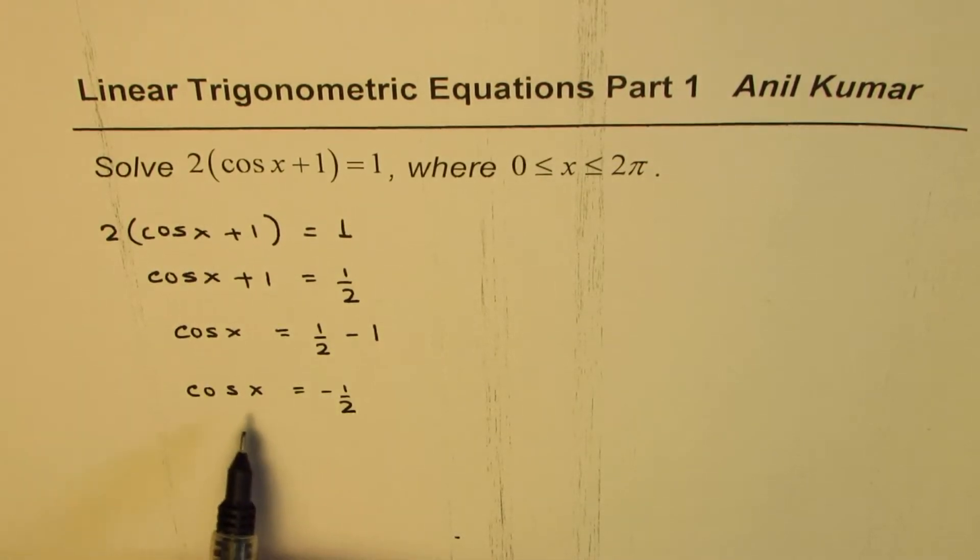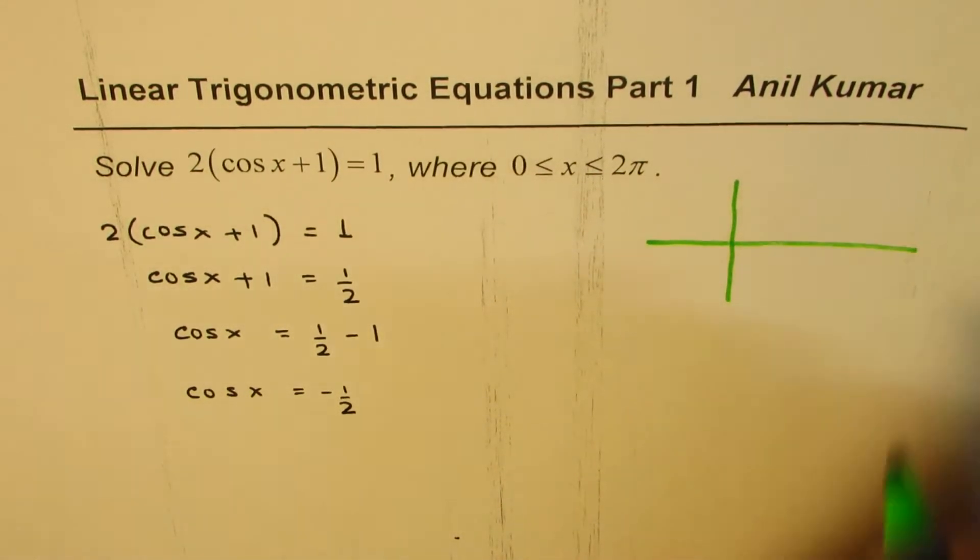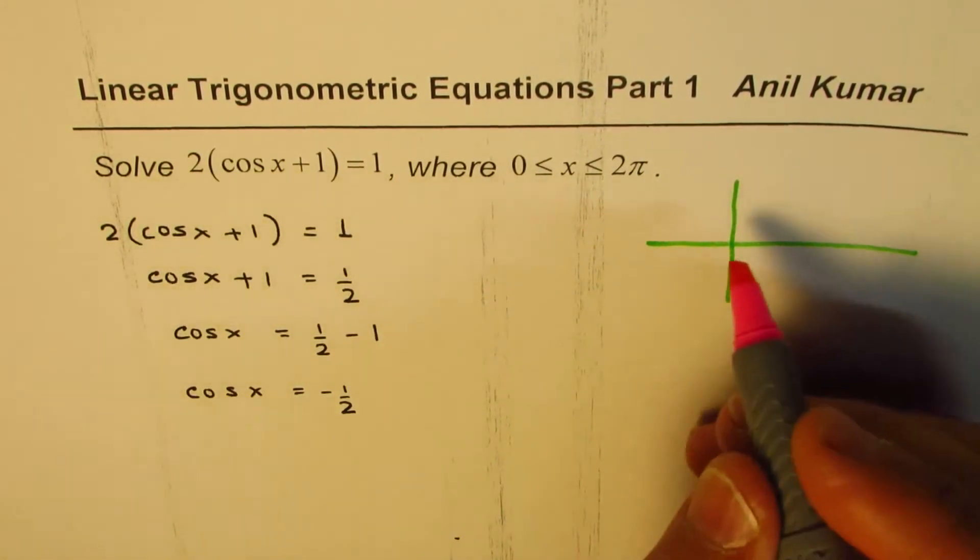Once we get the value of the trigonometric ratio, what we need to figure out is cos x = -1/2 means how many solutions. So let's figure that out, which we could do by sketching the graph and then looking into it.